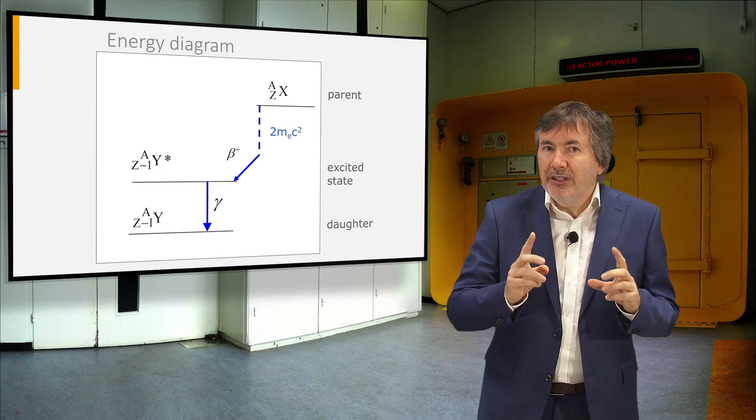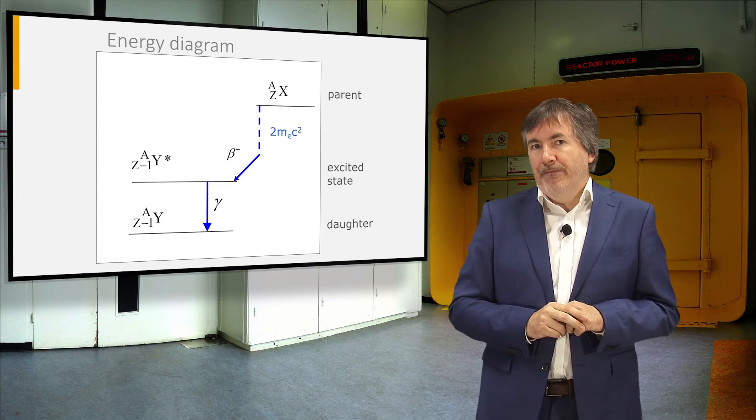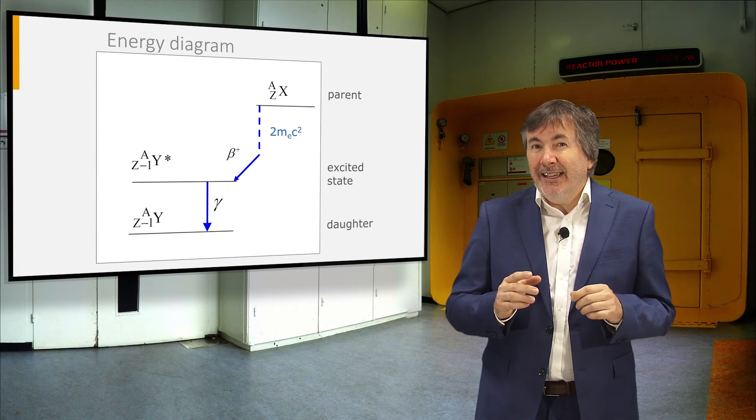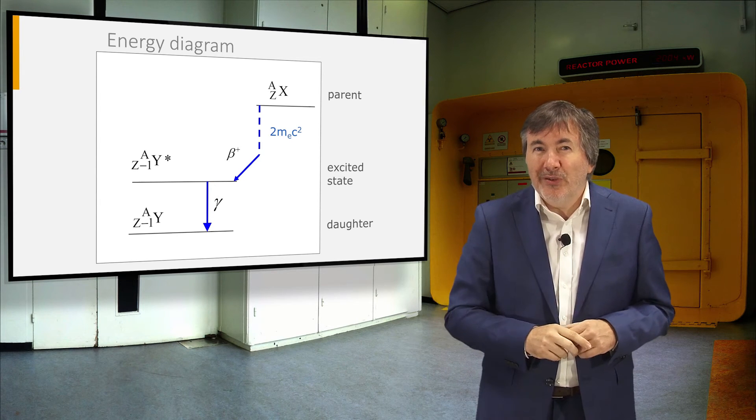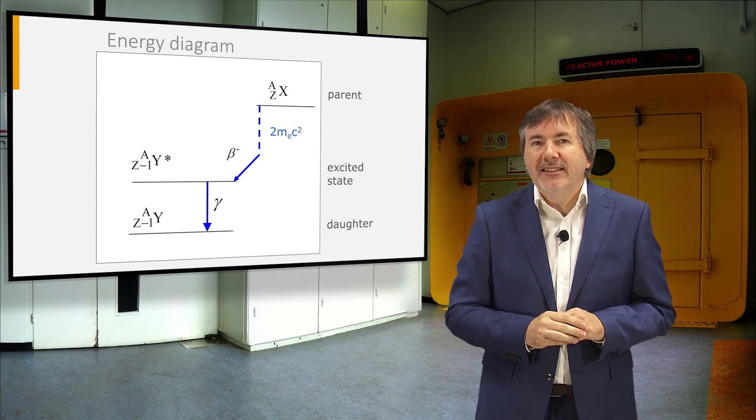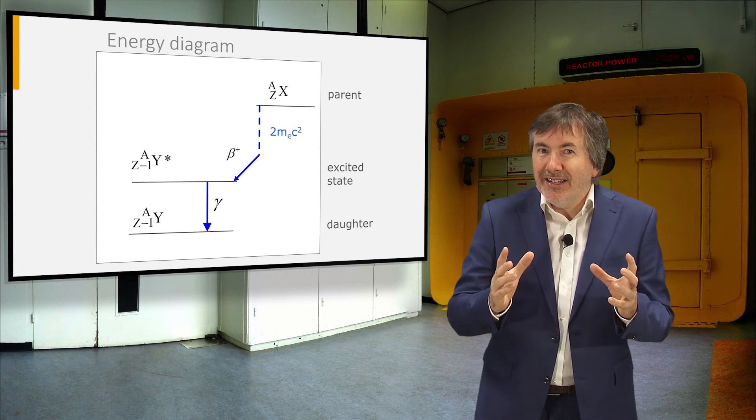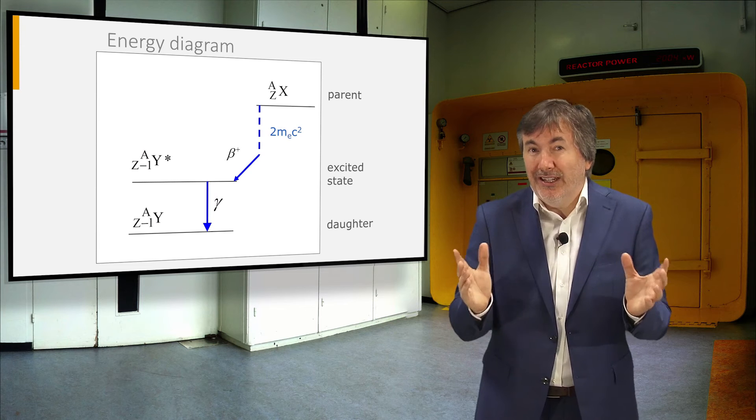There is also a difference with respect to the energy diagram. Beta-plus decay requires one MeV for the creation of an electron-positron pair in the nucleus, so that less energy is available to the positron and neutrino.